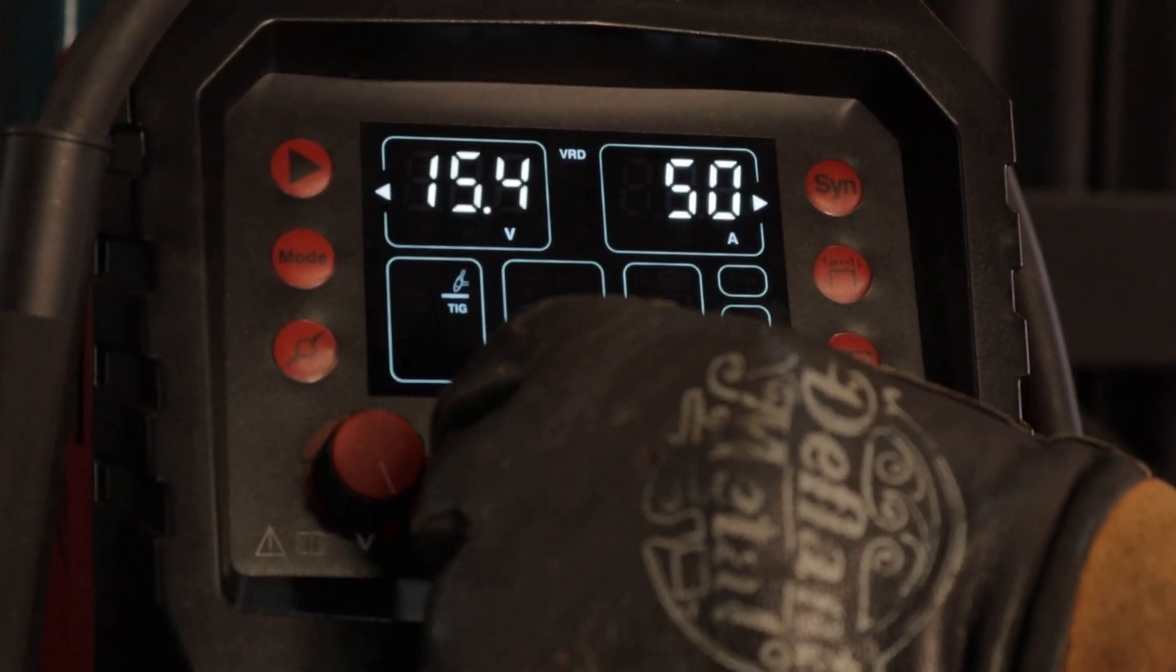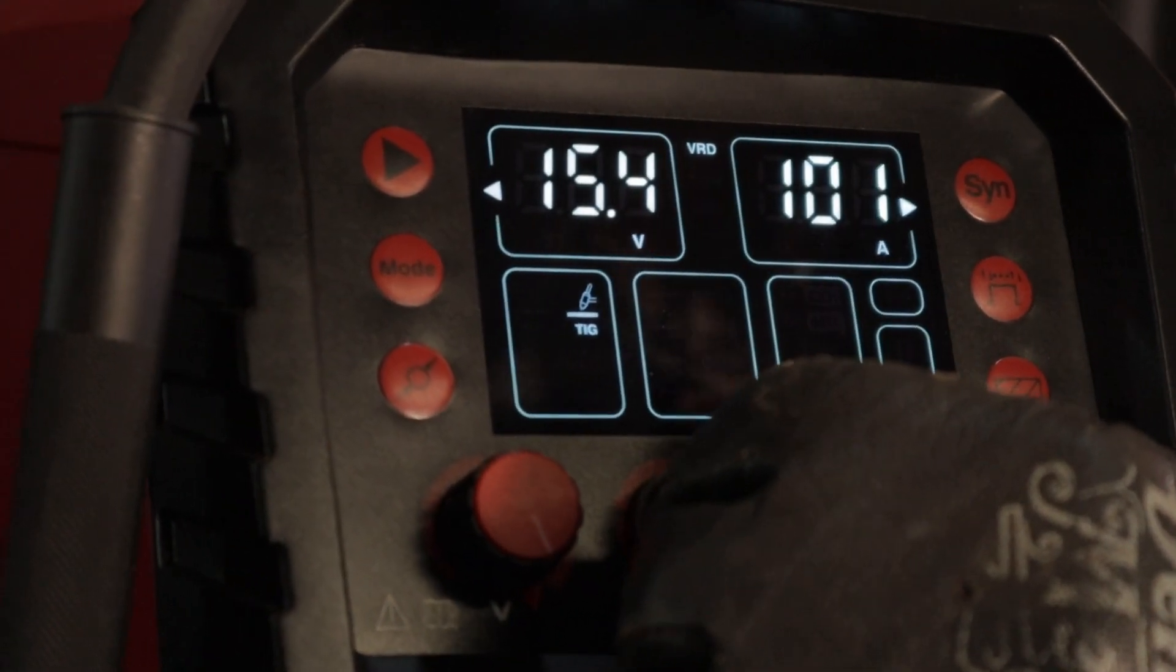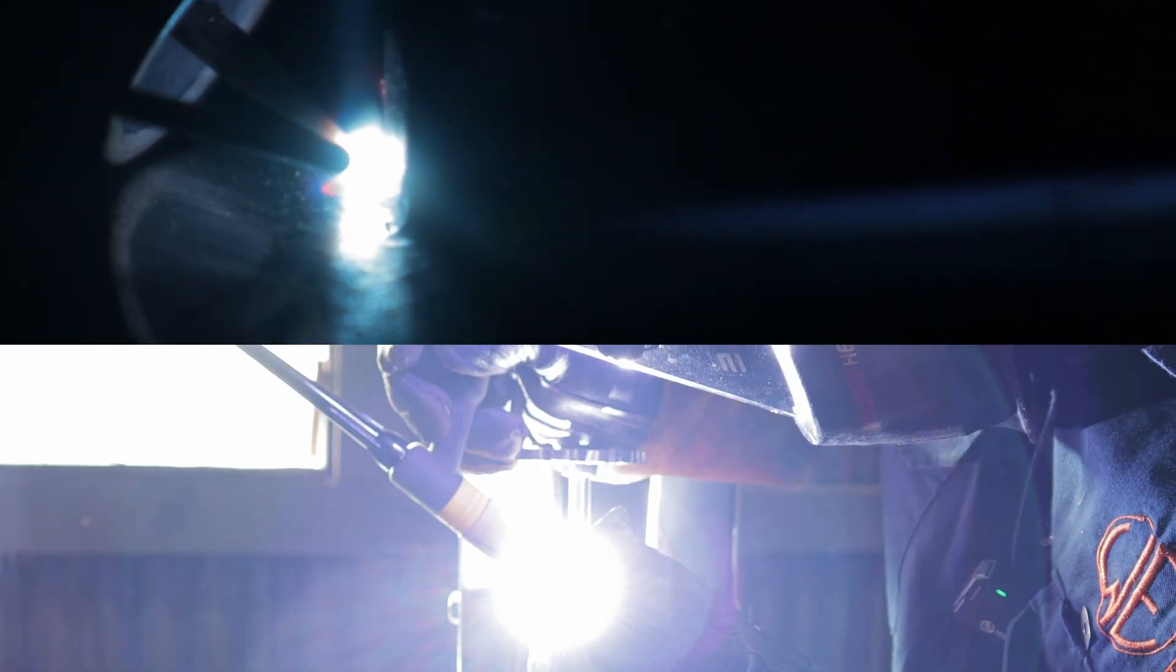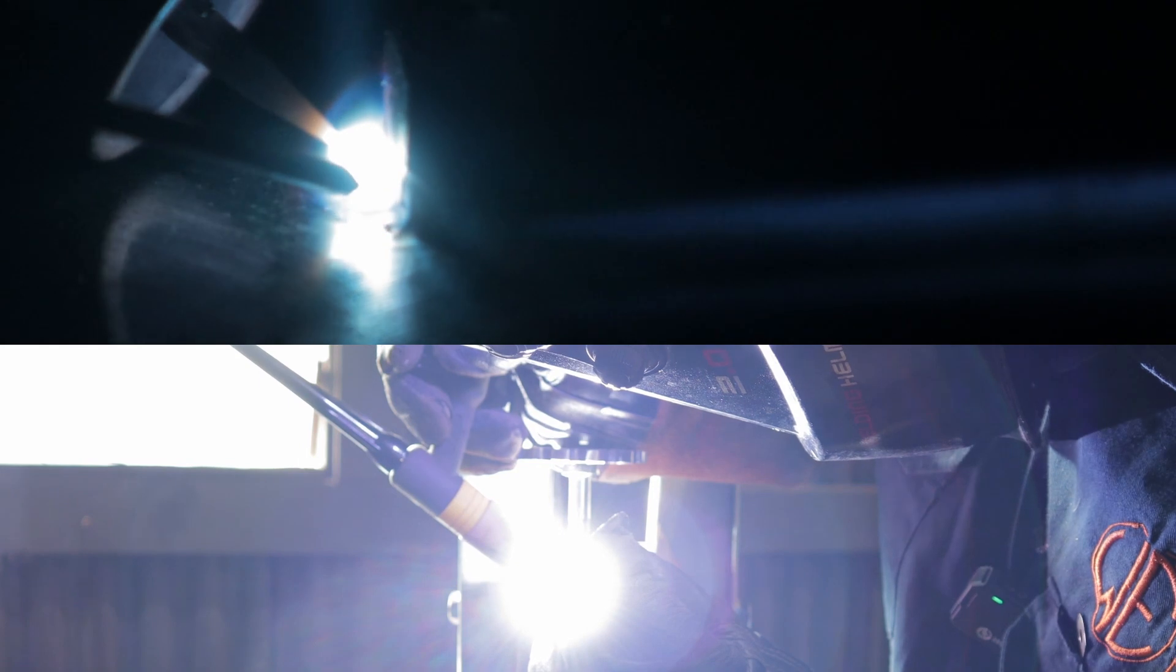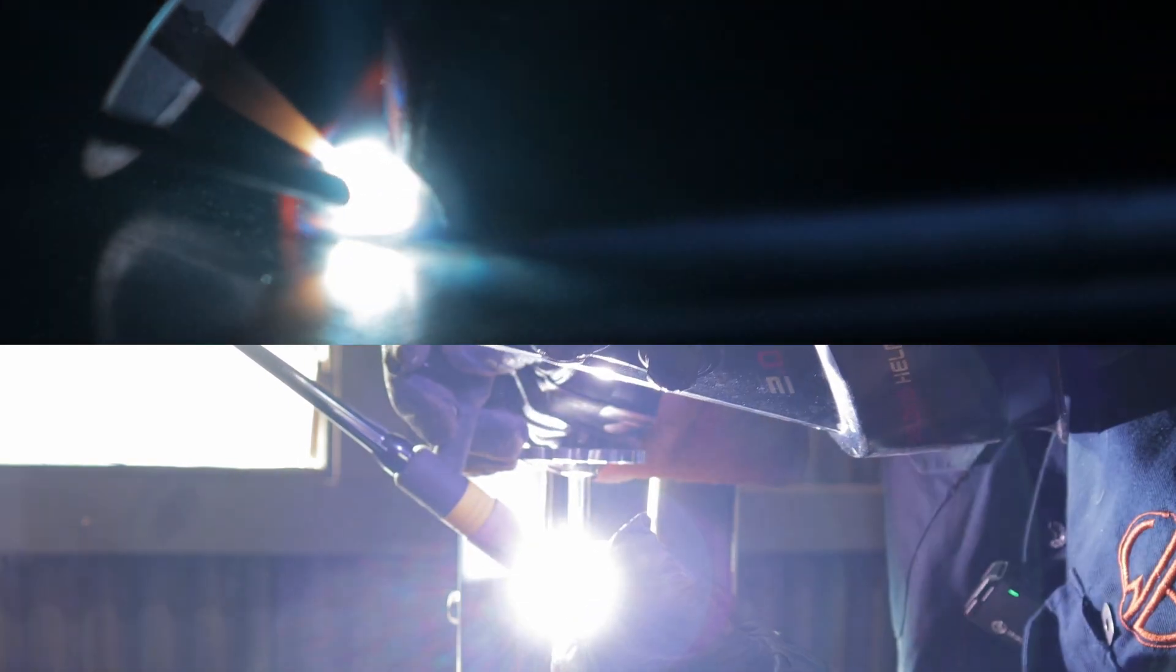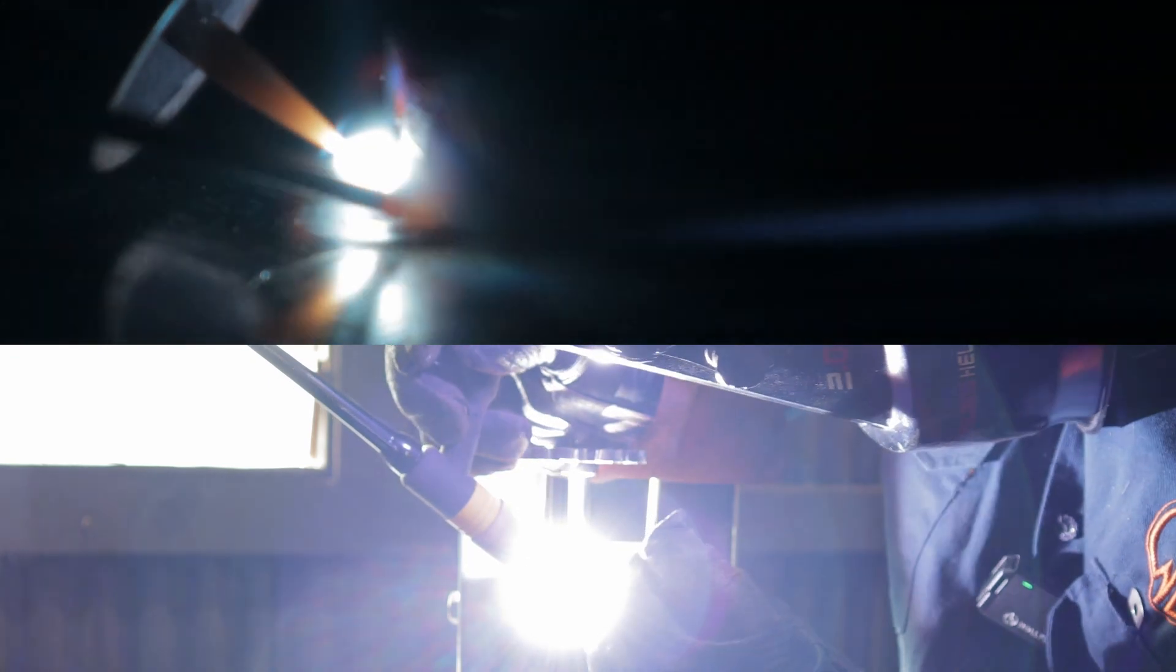For the clamp and the captive nuts I used a hundred amps and the same 1/16th or 1.6 millimeter ER70S-6 TIG wire. To weld around the captive nuts I screwed the bolt with the handle in so I could perch my hand off that and it allowed me to rotate around the nut easily.